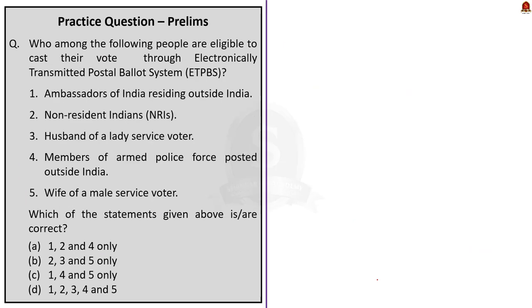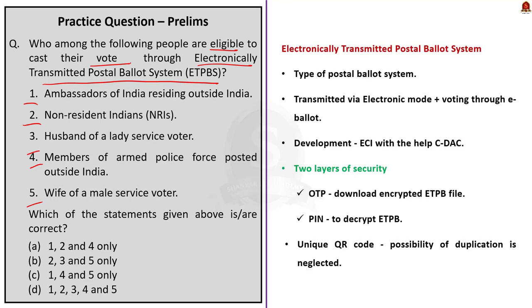The next question is about Electronically Transmitted Postal Ballot System, ETPBS. We have to find who among five categories is eligible to cast their vote through ETPBS. ETPBS is a type of postal ballot system where the postal ballot is transmitted through electronic means to voters, enabling them to cast their vote through an electronically received postal ballot, also called E-ballot. With the E-ballot, voters can cast votes from their preferred location, typically outside their originally assigned voting constituency. ETPBS was developed by the Election Commission of India with the help of CDAC.